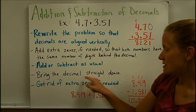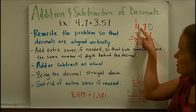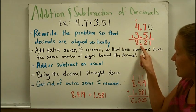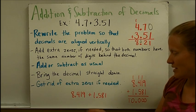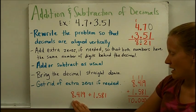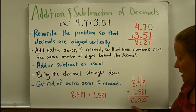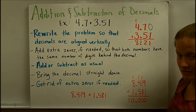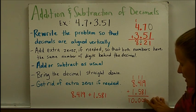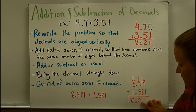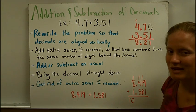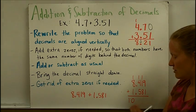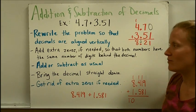Then I'm going to bring the decimal straight down in a line and get rid of extra zeros if needed. I have an example here where I added these two decimals and got ten and zero thousandths. We don't need any of these zeros, nor the decimal point. I'm going to teach you rules you can use to know how much you can erase from a decimal.